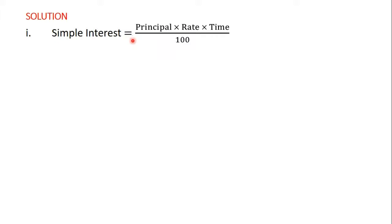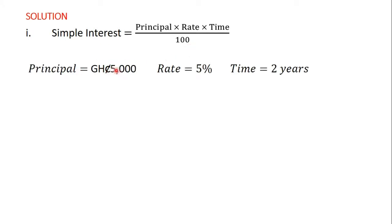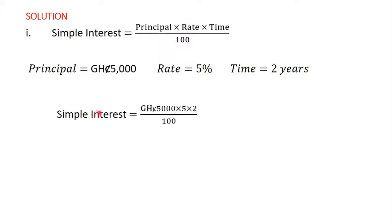We know that simple interest is equal to principal times rate times time divided by 100. The principal is five thousand Ghana cedis, the rate is five percent, and the time is two years. The rate in the formula is already a percentage, so the simple interest is equal to five thousand times five times two divided by 100.